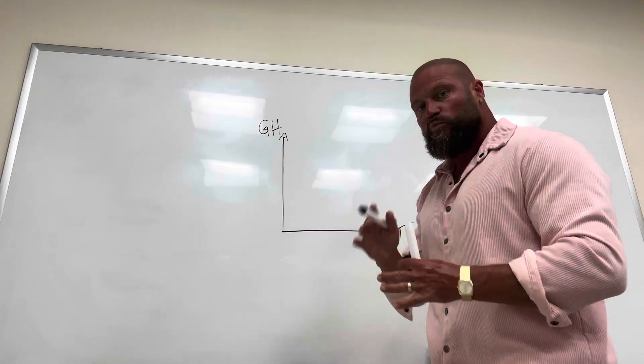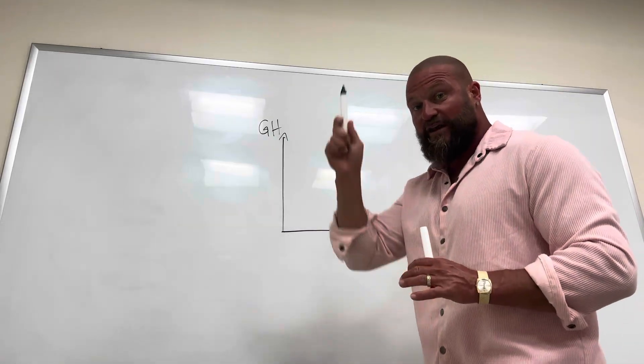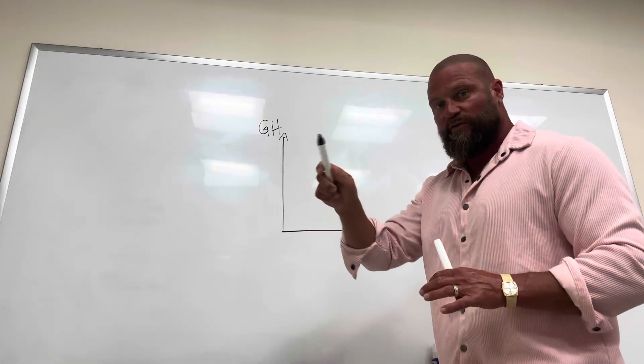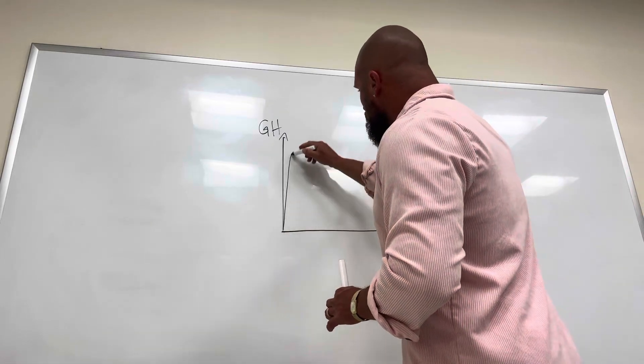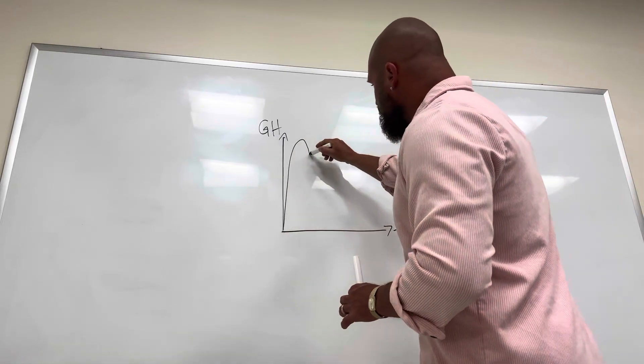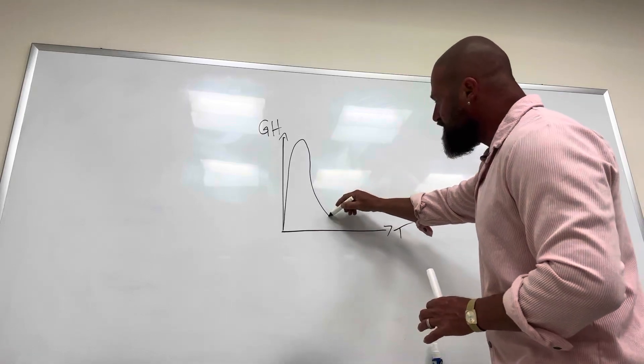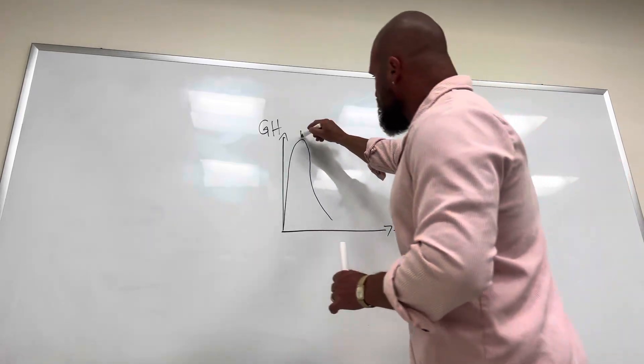So intramuscular injection will be very fast with the peak, very high in the peak, but the drop will be very fast as well. So injection happened, quick increase of growth hormone concentration, and then we will go down very fast as well. So this is intramuscular injection.